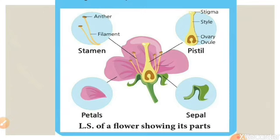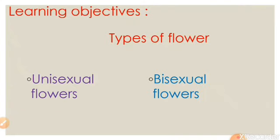The presence or absence of these parts of a flower can be used to classify flowers into two groups: unisexual flowers and bisexual flowers. Are you eagerly waiting to learn about the types of flowers and their role in reproduction? Shall we move on to the types of flowers?